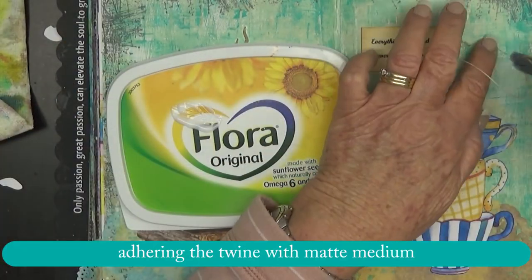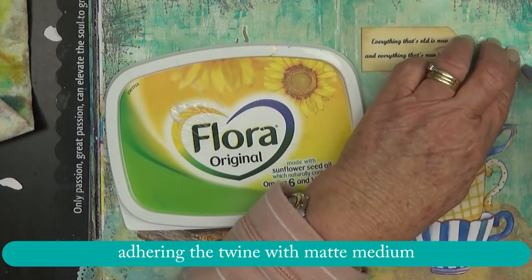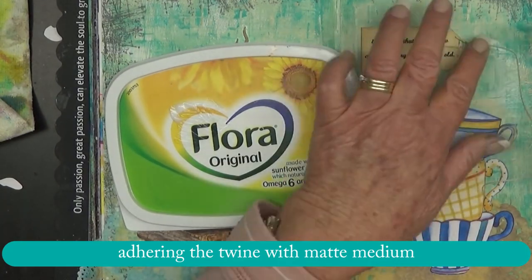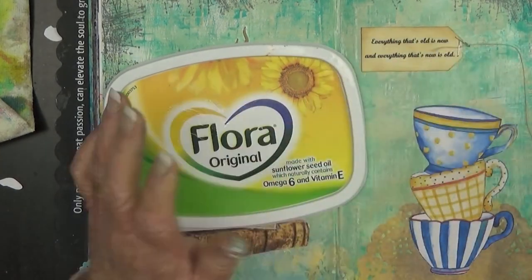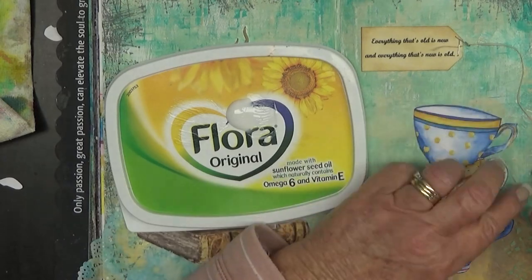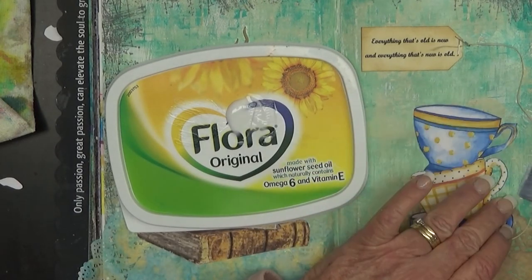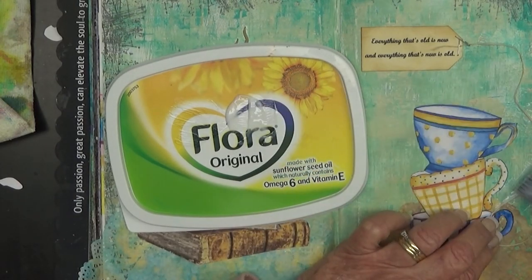Now I wanted to adhere that twine to the page and the best way I thought of doing that was using some Matte Medium. I could have used some Gel Medium, a bit thicker, but it still worked with the Matte Medium.